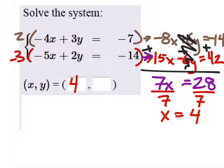And now what equation do we want to use to solve for y? Because it doesn't matter. Top, very good. Negative 4x plus 3y equals negative 7. And we're going to replace the x with the value we found, which is 4.